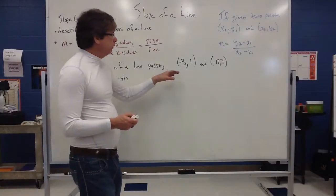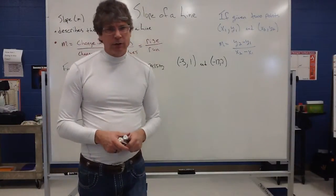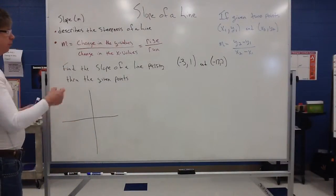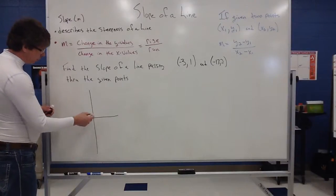Looking at (-3, 1) doesn't look like a big deal, but that (-17, 2), I don't know if I want to make a graph that goes out to (-17, 2). So I may back away from that graph. I may make a table or use the formula. But if I do use a graph, I'm not going to make it a real accurate graph.